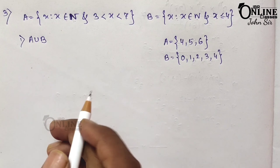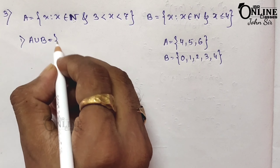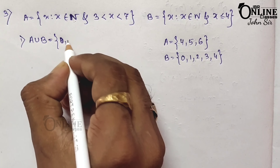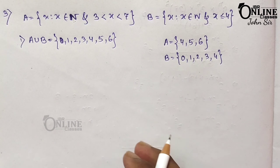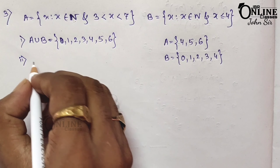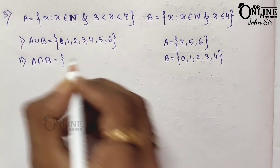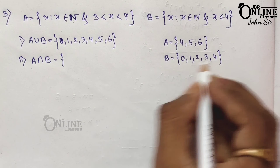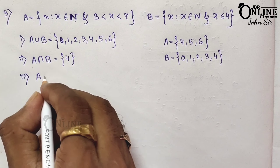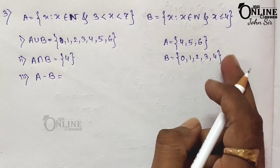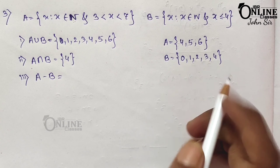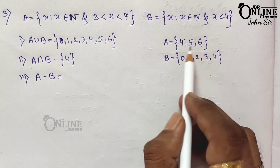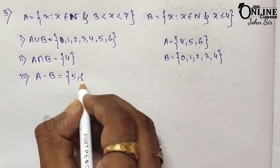Now find A union B: all numbers combined, starting with 0, 1, 2, 3, 4, then 5 and 6. Next, A intersection B: the only common element is 4, so write down only 4. Then A minus B: subtract the common element 4 from A, so the remaining elements are 5 and 6.